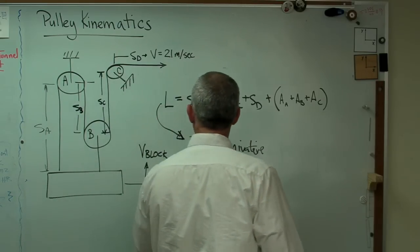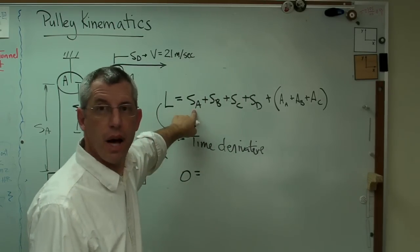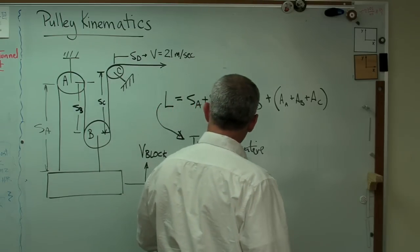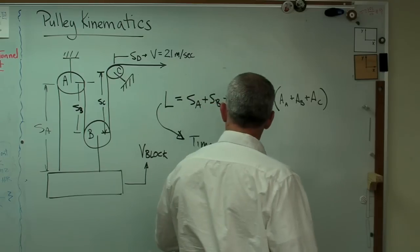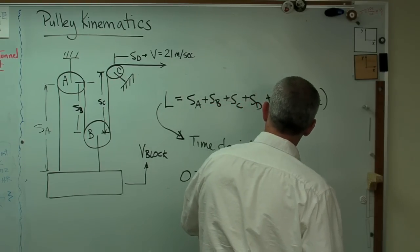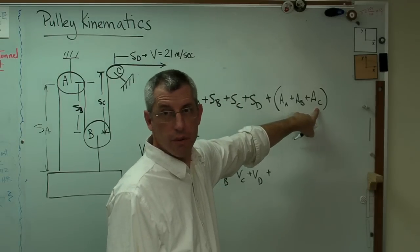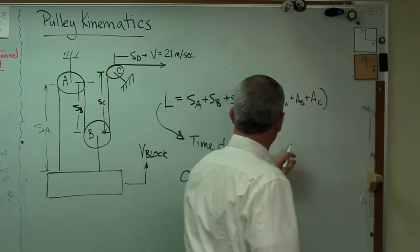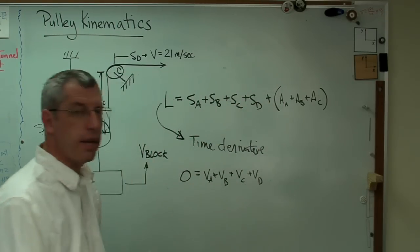So zero equals the time derivative of A, which is the velocity of A. So I'm just going to write VA, time derivative of length B is the velocity of B plus velocity C plus velocity D plus the time derivative of all those. Well, the time derivative of all those equals zero as well, so I can stop. That went to zero, that went to zero, and now I've got this.